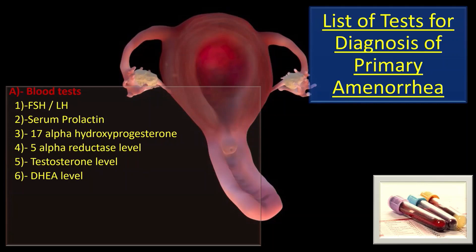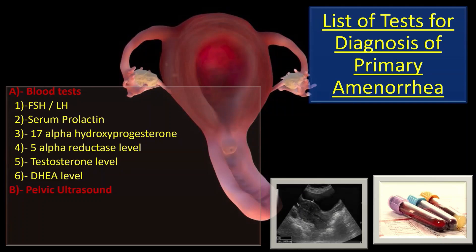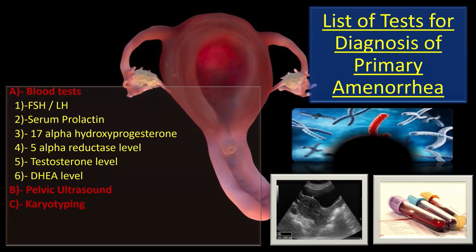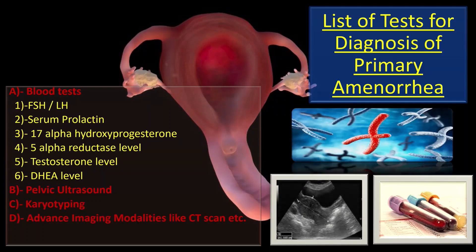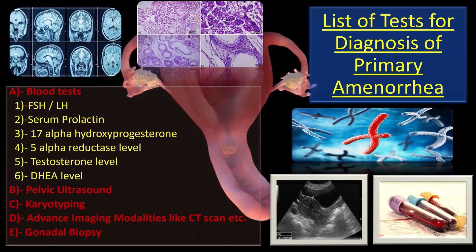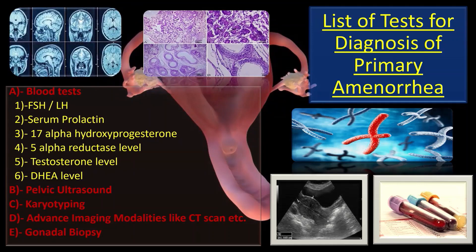Other tests include pelvic ultrasound, karyotyping, advanced imaging modalities like CT scan, and gonadal biopsy. I will now explain which test is needed in the evaluation of each primary amenorrhea case.